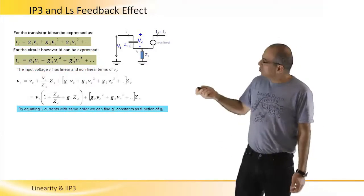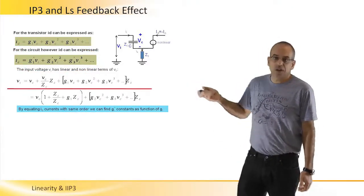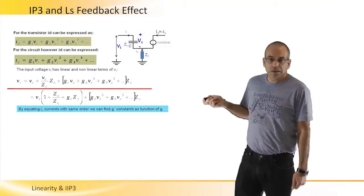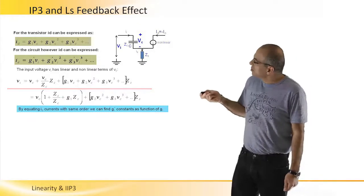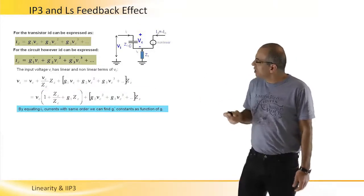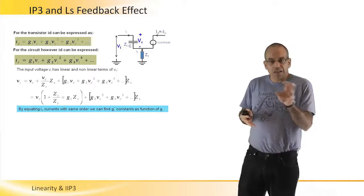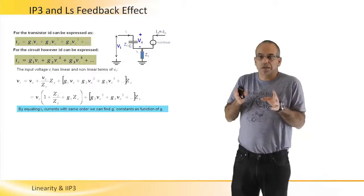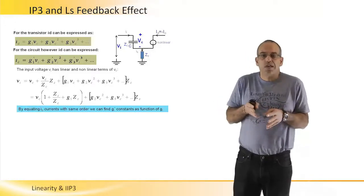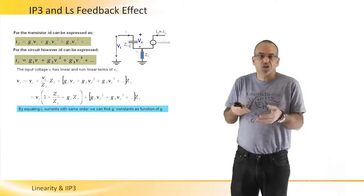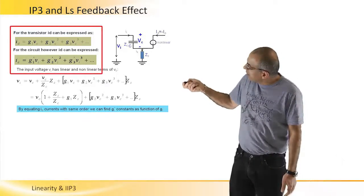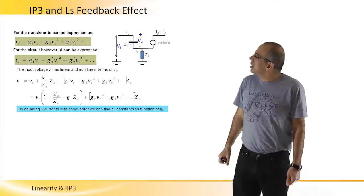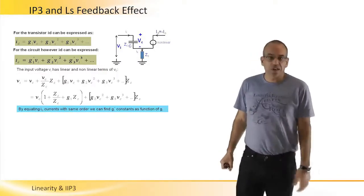So here we have the first description that is actually looking at the output current versus VGS. Here we have the output current versus VIN. And by describing VIN as a function of VGS, we can find that there is some simple relationship we can do.